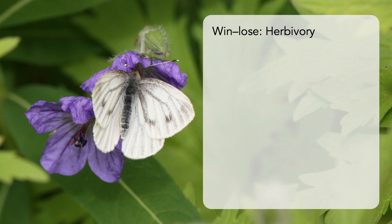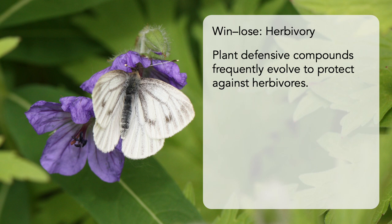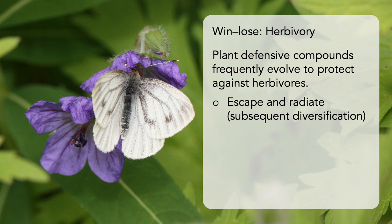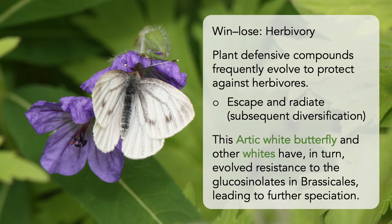Next, we have herbivory. One of the most common trends is how plant defensive compounds evolve to protect against herbivores. Once a particularly effective new protection evolves, this can create an escape-and-radiate scenario, allowing for a subsequent rapid diversification of that lineage of plants. Escape-and-radiate co-evolution has occurred within the Brassicales order of plants and a particular group of butterflies. This arctic white butterfly, along with other whites, has evolved resistance to the glucosinolates, or mustard oils, produced by this clade of plants, leading to further speciation of both along the way.